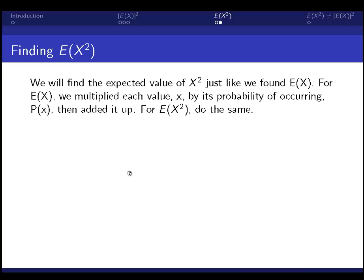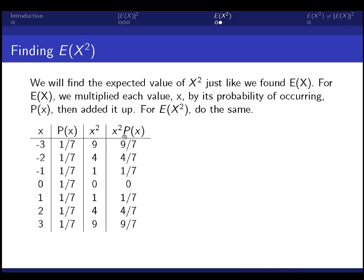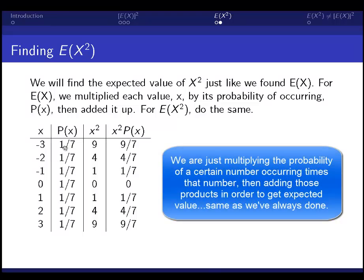Now let's find the expected value of that variable, x squared. Let's go through this process and multiply x squared by the probability that that x occurs. So 1 7th of our numbers are negative 3.